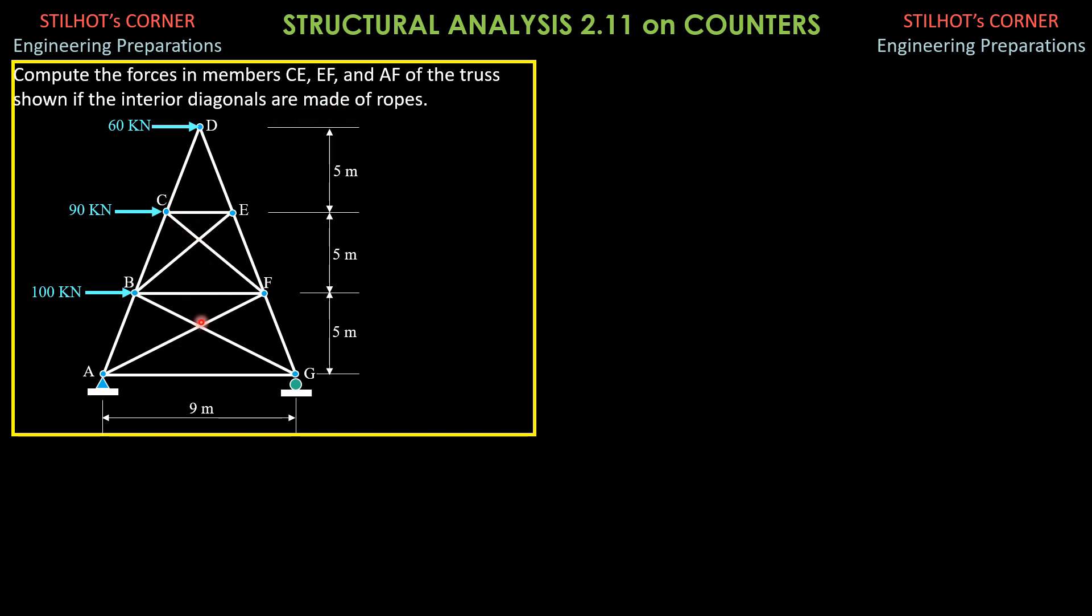These interior diagonals here are made of ropes. Therefore, if they are subjected to compression, they are automatically carrying no compression, so they are zeros. Since we have horizontal lateral loads, if we section this part here, this member CF should oppose this lateral load. This should be in compression, and therefore it is zero as shown.